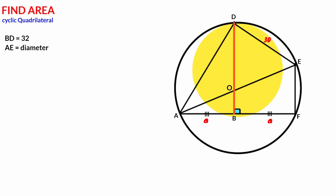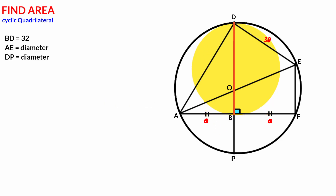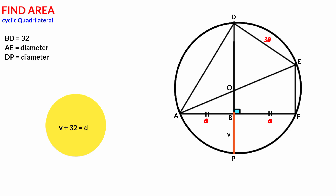We extend line BD downward to touch the circumference of the circle — call this point P. Since line DP passes through point O, which is the center, it is a diameter. Recall that segment BD has a length of 32 units. So letting the remaining segment be v, we have v plus 32 equal to d, where d is the diameter. Therefore v equals d minus 32.